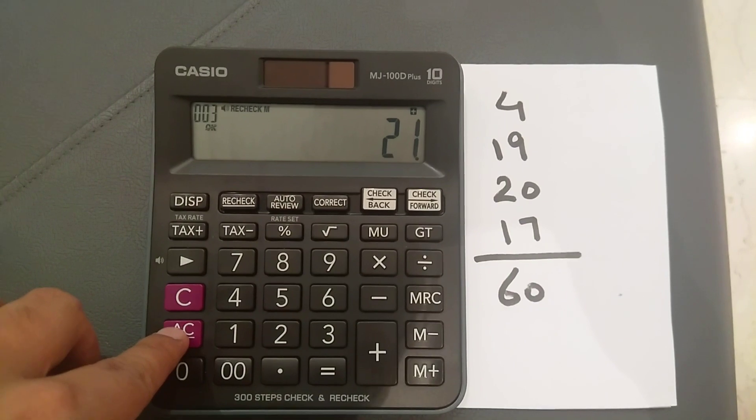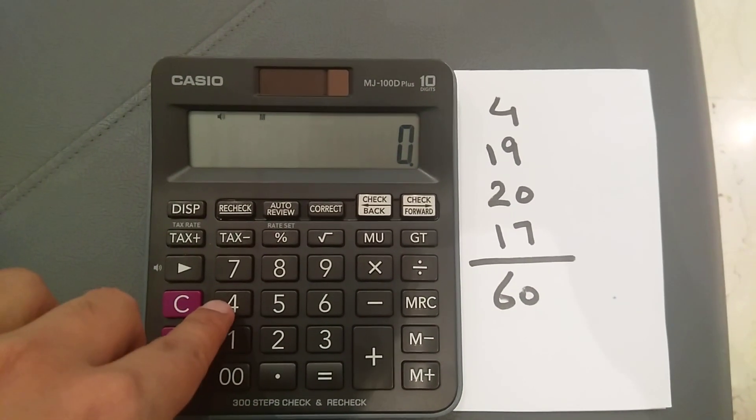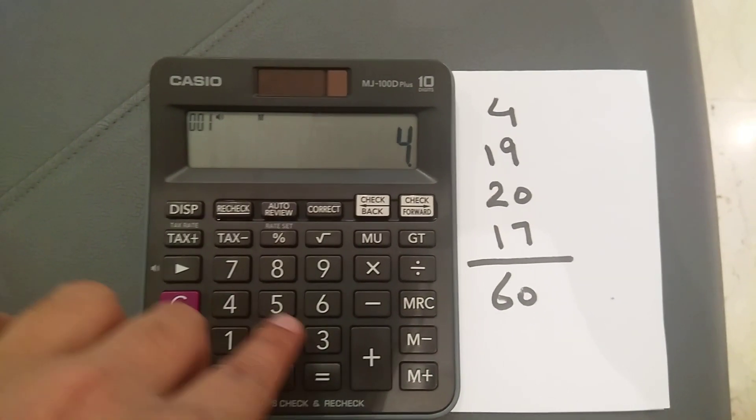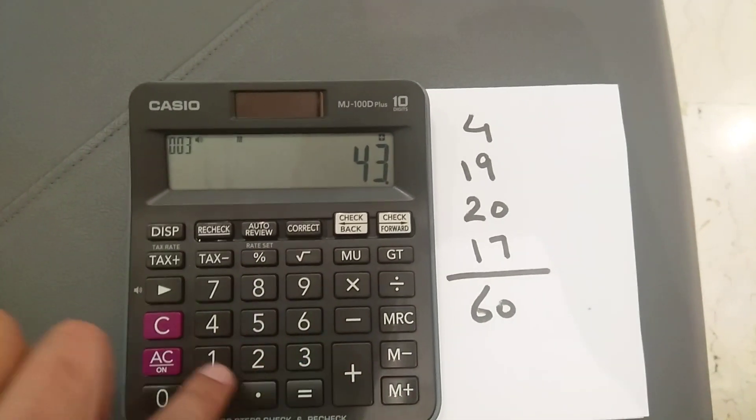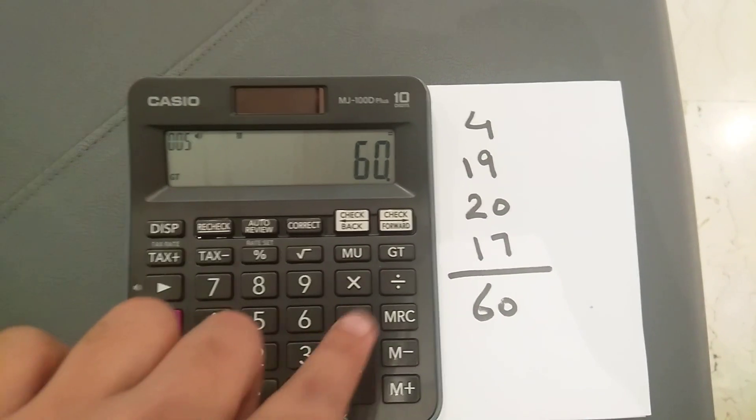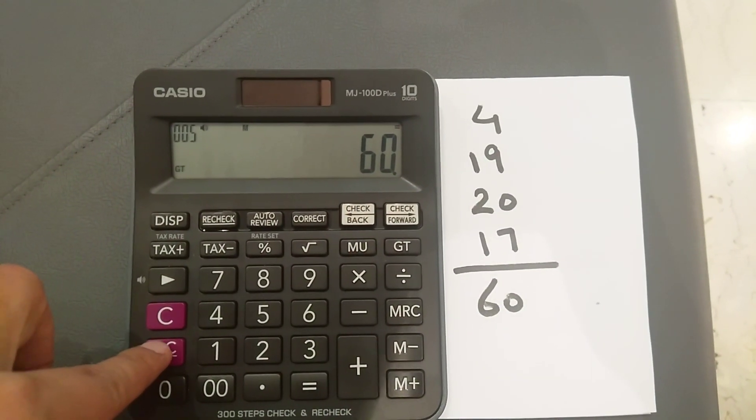4 plus 19 plus 20 plus 17 equals 60. Okay, now I want to recheck it.